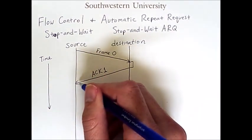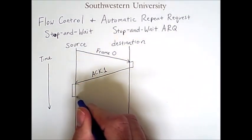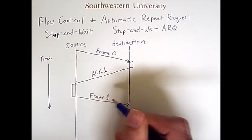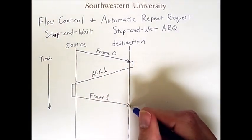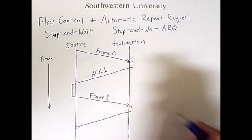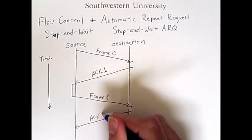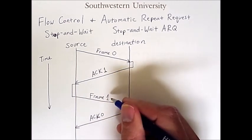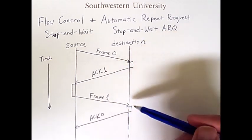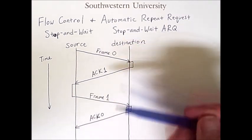Once the source receives the acknowledgement, some time passes while it prepares the next frame, and then it sends frame one, which is then received by the destination. Some time passes and an acknowledgement is sent back. This is ACK zero, not ACK one. In the stop and wait ARQ scheme, because every single frame is acknowledged individually, it only maintains two frame numbers — zero and one — and alternates back and forth between them.